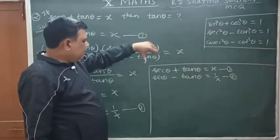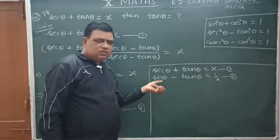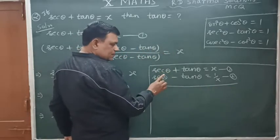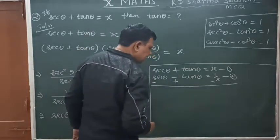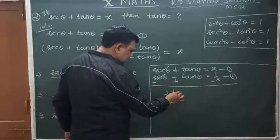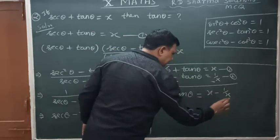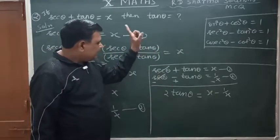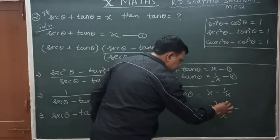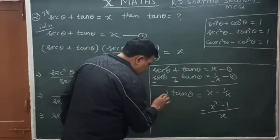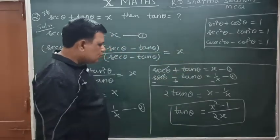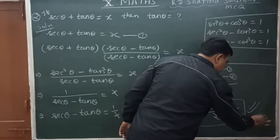Now we need tan θ. In the previous question we needed sec θ, so we added both equations, but now we need tan θ, so we subtract both. From equation 1, we subtract equation 2 — sec minus sec cancels out, and tan θ plus tan θ gives 2 tan θ, and x minus 1/x. We take LCM and get x² minus 1. Because we need tan θ only, by cross multiplication we get tan θ equals (x² − 1) upon 2x. That is option number D — it is correct.